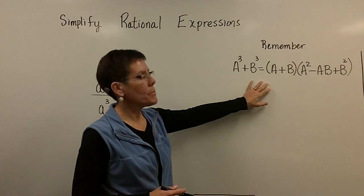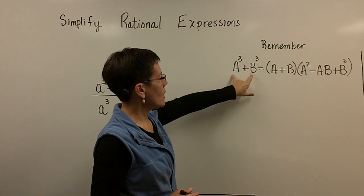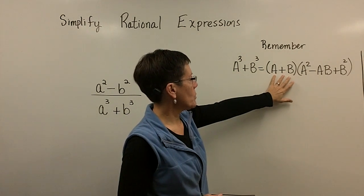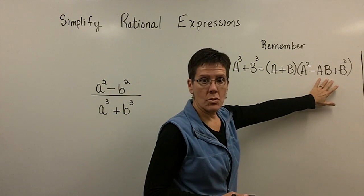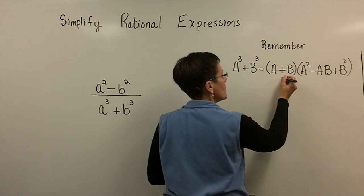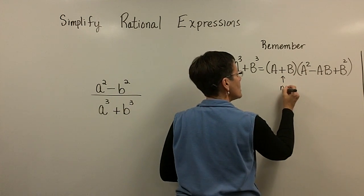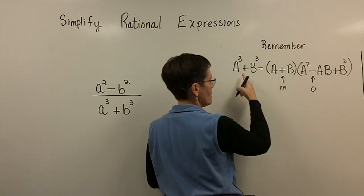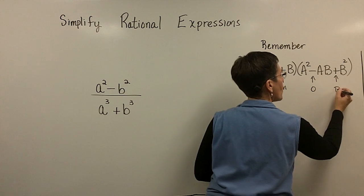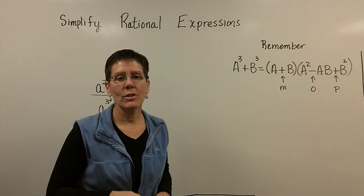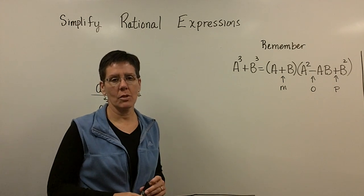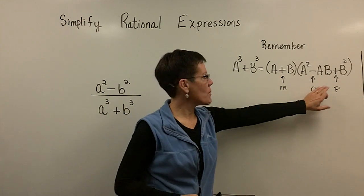Over here I've just put up that the sum of two cubes can be factored into this binomial a plus b and this trinomial a squared minus ab plus b squared. Please remember that this sign has to match. This sign is the opposite of, in this case we're doing the sum of cubes, and this sign is always positive, so I use that acronym MOP to make sure that I factor a cube correctly. The sign matches, it's opposite and it's positive.